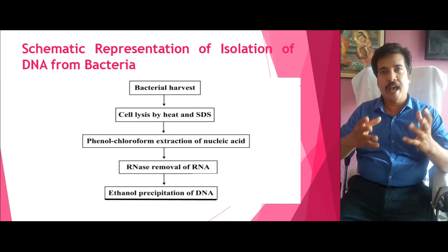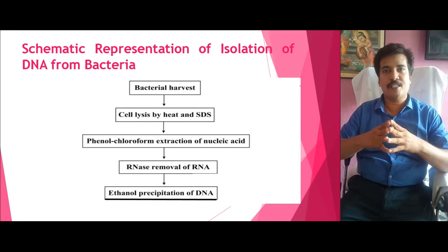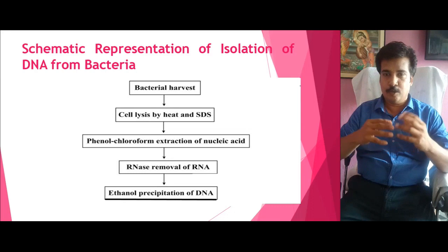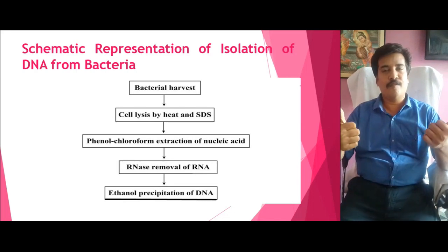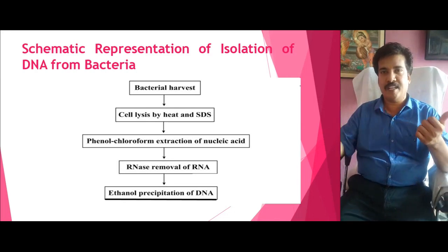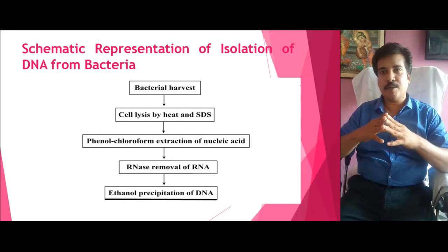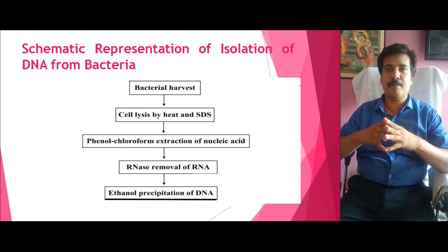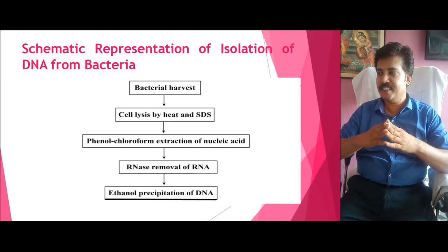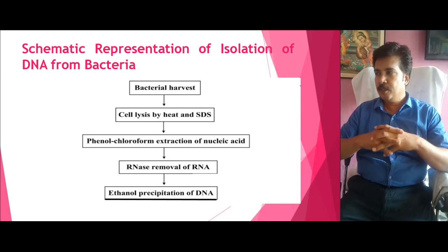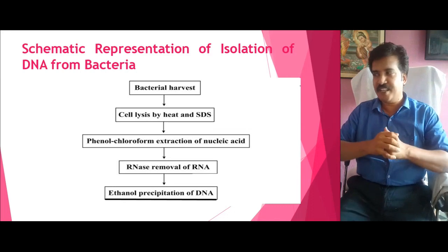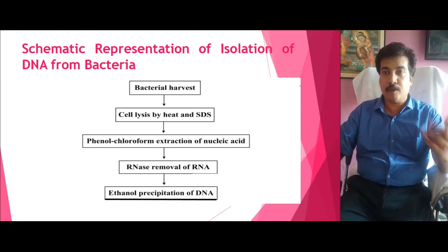Phenol and chloroform are reagents that have the ability to digest all cellular components except the nucleic acid. In the nucleic acid fraction you will find two things: DNA and RNA. Since we need only DNA, the mRNA, tRNA, and rRNA present inside the aqueous fluid of the bacteria should be destroyed. That can be done with treatment with an RNase enzyme. Finally, we will precipitate the DNA using ethanol. This is the simple schematic representation of the process.